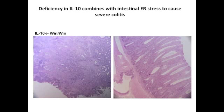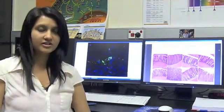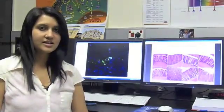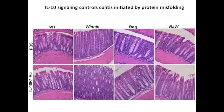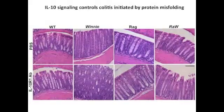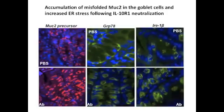So it's clear that different genes can combine together to drive intestinal inflammation. To explore a possible direct effect of IL-10 on ER stress, we next neutralized IL-10 receptor 1 in the Winnie mice. Within 96 hours of IL-10 receptor 1 neutralization, the Winnie mice lost 25% of their body weight. As you can see in the histological sections here, there was a significant loss of goblet cells in the distal colon. However, Muc2 precursor antibody revealed that goblet cells were present, and there was misfolded Muc2 accumulating within the ER.